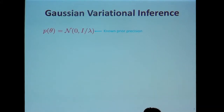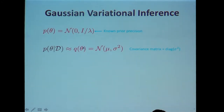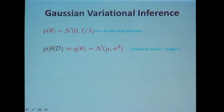Let me give some background on Gaussian variational inference. Throughout the talk, I'll assume a simple setting: the prior is a Gaussian with zero mean, and lambda is a known precision parameter. In variational inference, we approximate the posterior distribution by a fixed-form distribution — here a Gaussian — where the mean mu is unknown and the covariance matrix is assumed to be diagonal. The goal is to find mu and sigma squared such that q(theta) is close to the exact posterior.